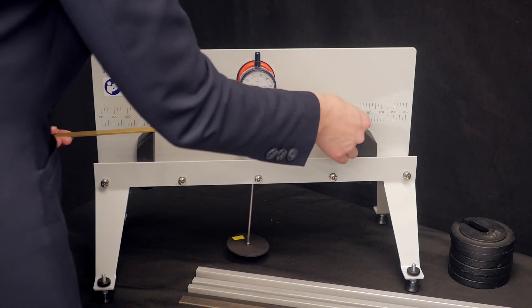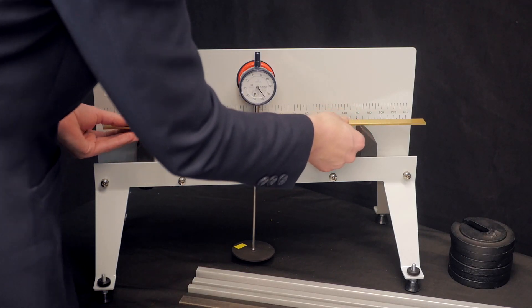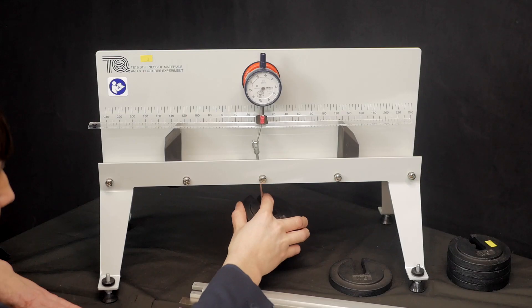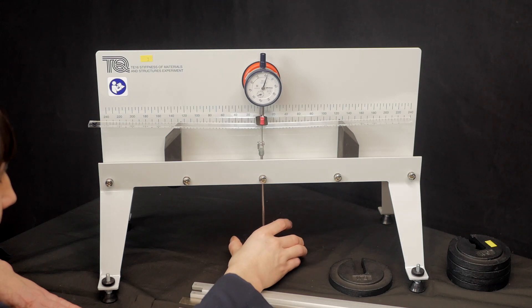The experiment is very simple to use, let me show you. You load the specimen onto the apparatus and apply a load. The dial indicator measures the deflection of the specimen at the point of loading.